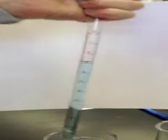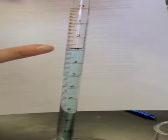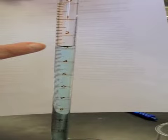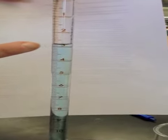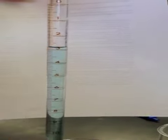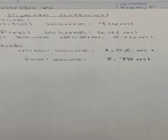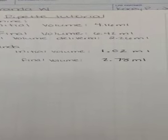And take the final volume which will be 2.78, read from the bottom of the meniscus once again. The final volume is 2.78 milliliters.